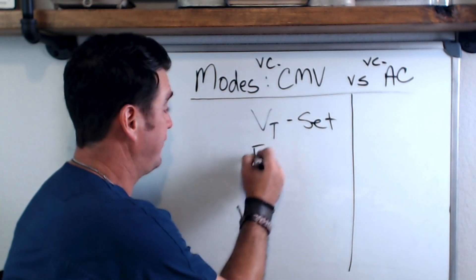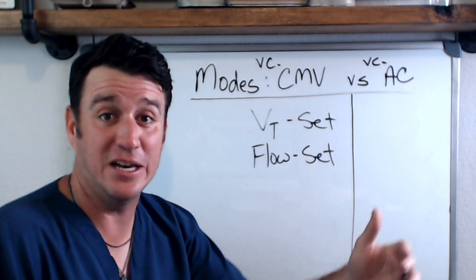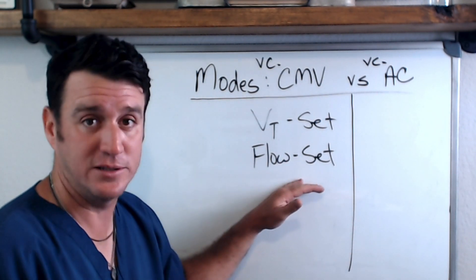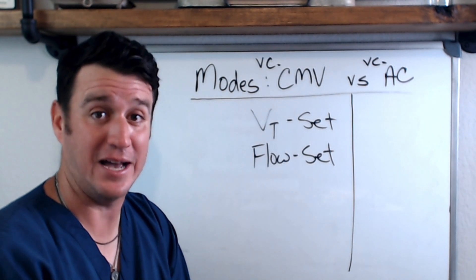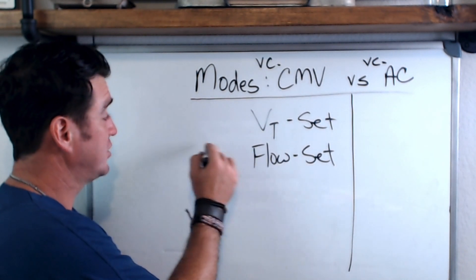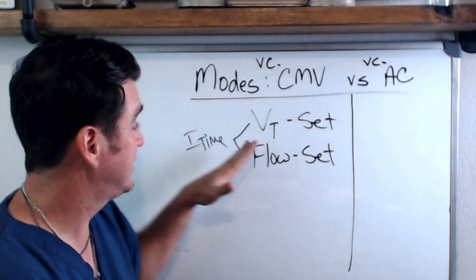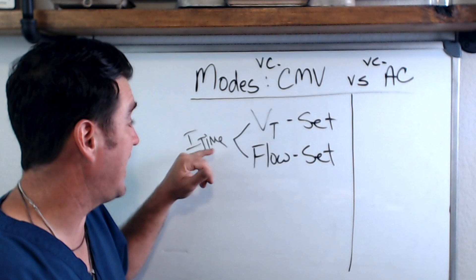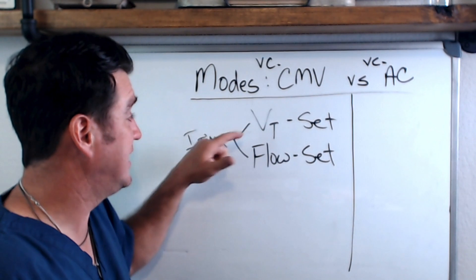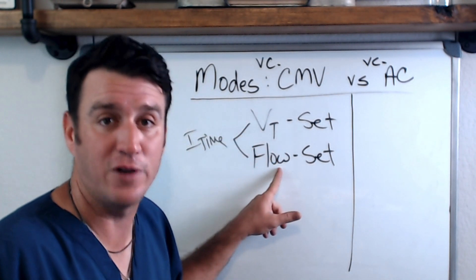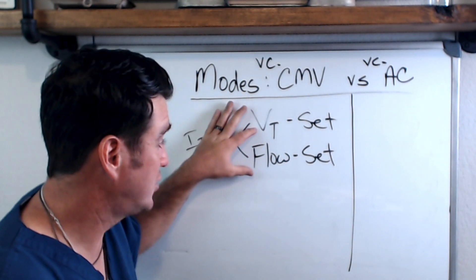We also tell the vent how fast to deliver that tidal volume — that's what flow does. If you set a higher flow, you deliver that tidal volume faster, which means a shorter I-time. Some vents have you set I-time instead of flow. Tidal volume and flow work together to establish a fixed I-time, and I-time is how long the inspiratory phase will last.